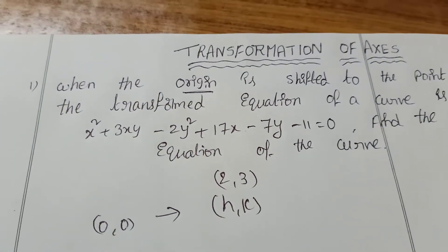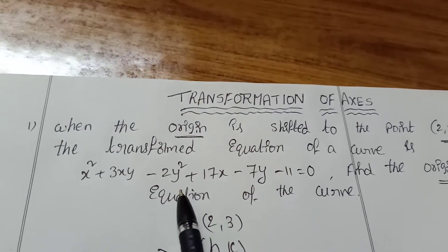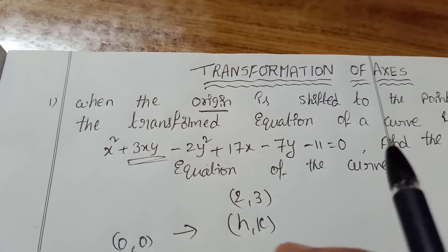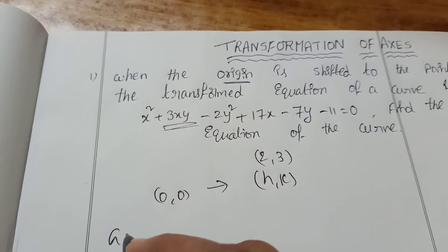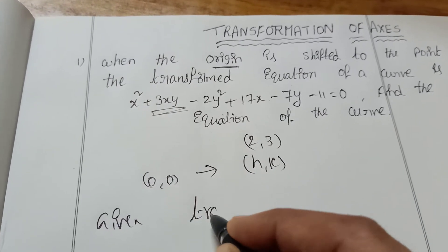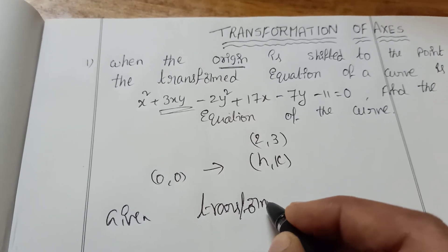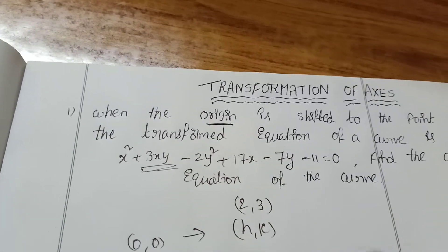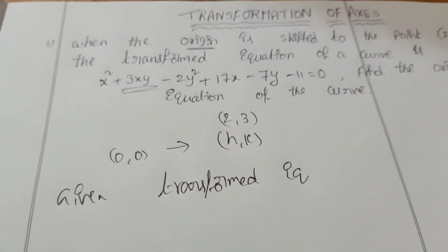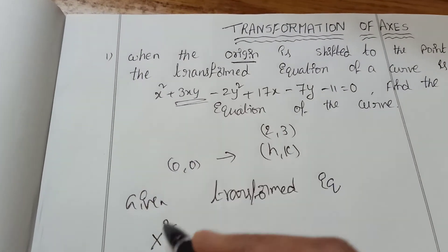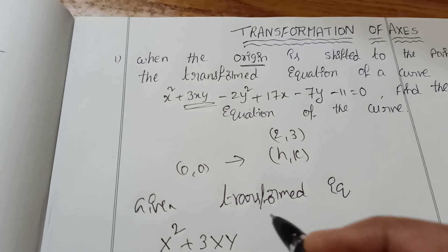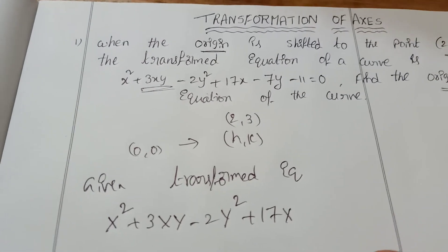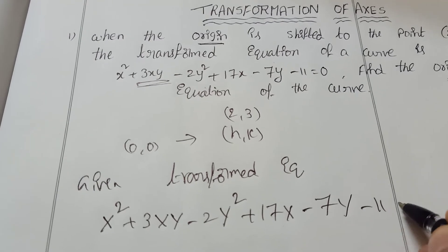Original equation is being asked. Given: origin is shifted to H comma K, and H comma K is 2 comma 3. The transformed equation of the curve is given — that's why we write capital X. The transformed equation is: capital X square plus 3 capital X capital Y minus 2Y square plus 17X minus 7Y minus 11 equal to 0.